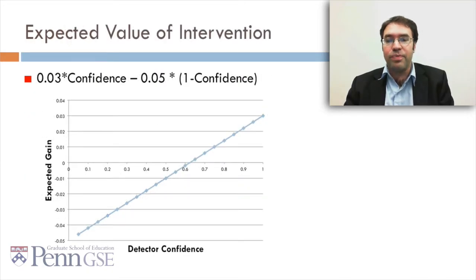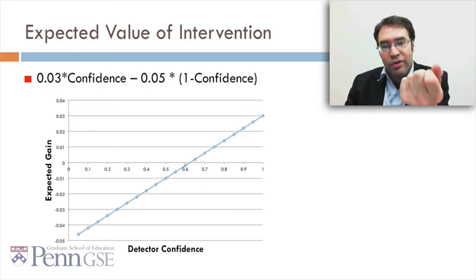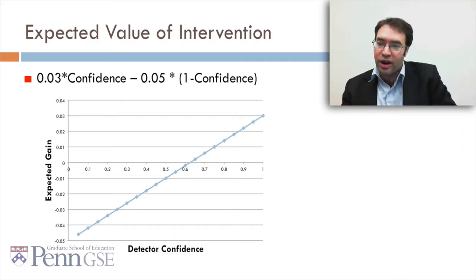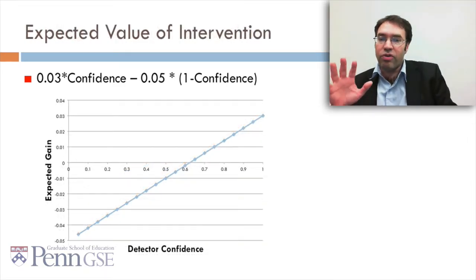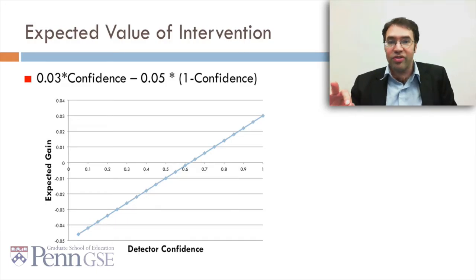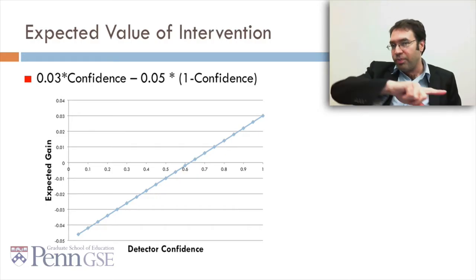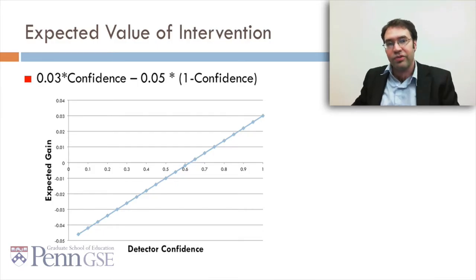In that case we can compute the expected value of the intervention based on an equation of 0.03 times confidence minus 0.05 times (1 minus confidence). So if you're right, you have an expected value of 0.03, but if you're wrong, you have a negative expected value of 0.05. Here we can see this function plotted on the graph. We can see that if detector confidence is about 62%, then it's good. The expected gain comes above 0 when the confidence is about 61% or so.